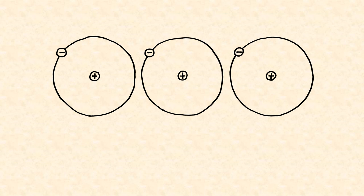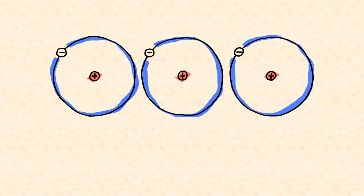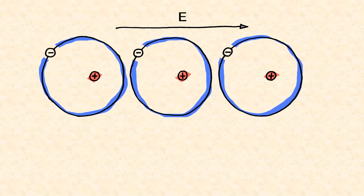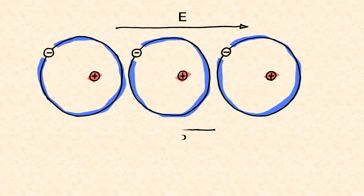Materials usually consist of atoms. Atoms have positively charged cores and negative electrons. An external electric field slightly shifts the position of the electrons and leads to an internal polarization. Inside the medium, the total field therefore is the sum of the external field and the polarization.